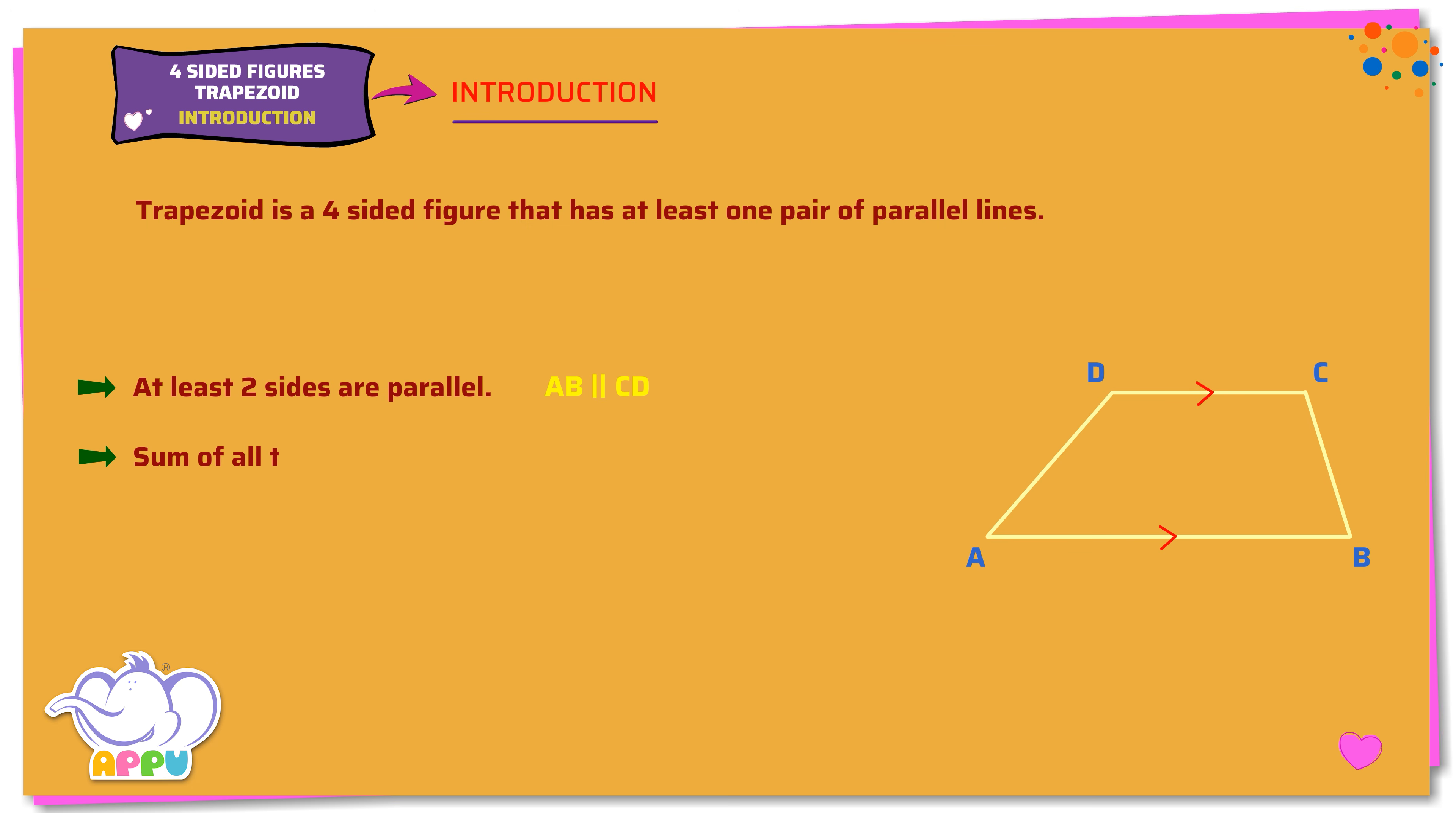The sum of all angles of a trapezoid adds up to 360 degrees. Angle DAB plus angle ABC plus angle BCD plus angle CDA equals 360 degrees.